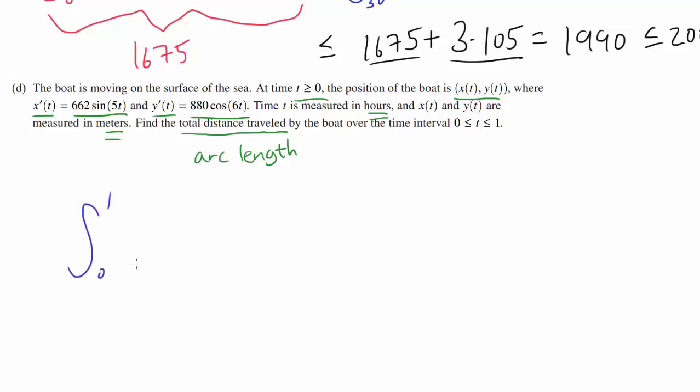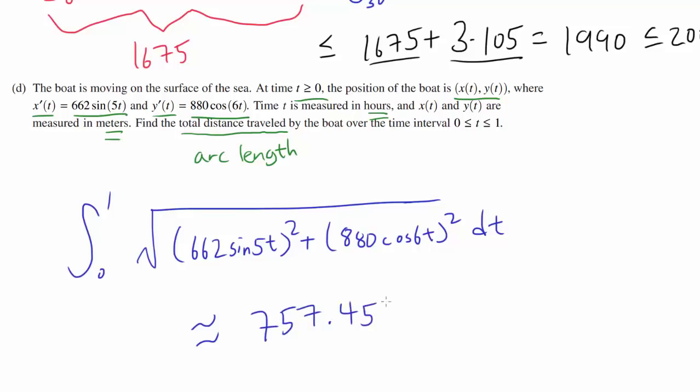This is extremely easy. We just have to integrate this. If you remember the formula, from 0 to 1, square root of [x'(t)]² plus [y'(t)]² and just integrate this. Just plugging it into your calculator shouldn't take you longer than a minute. 757.456 meters and we're done.